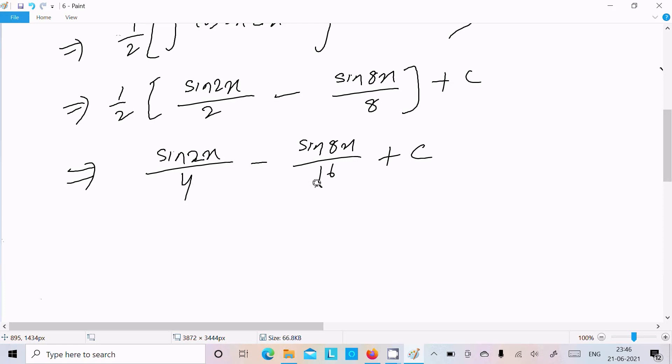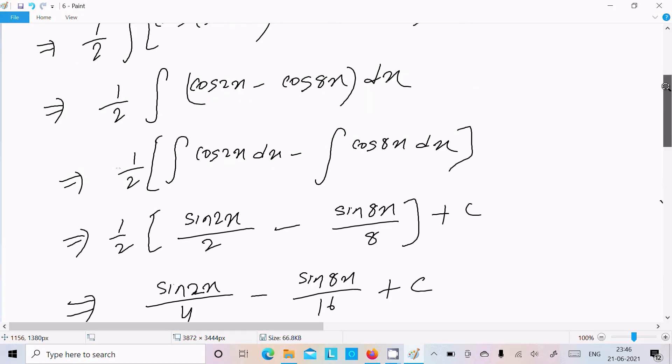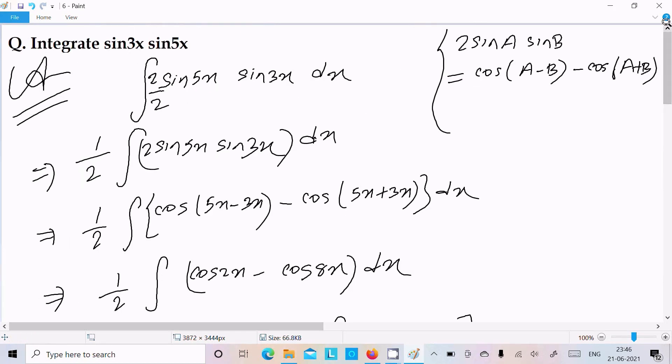So, 1/4 sin2x minus sin8x divided by 16 is the answer. Let me repeat: we can easily achieve the output if we multiply numerator and denominator by 2.